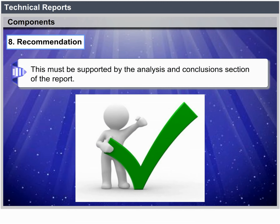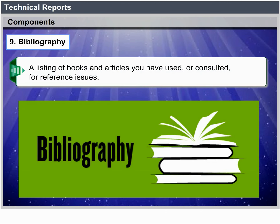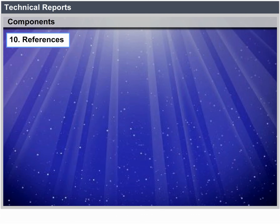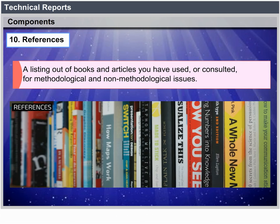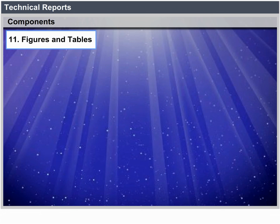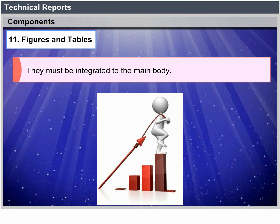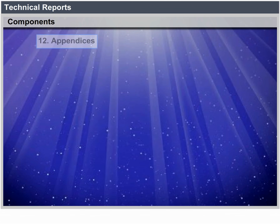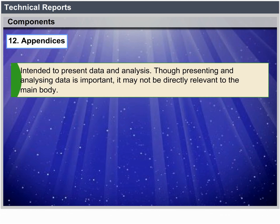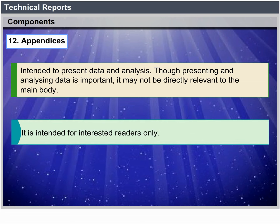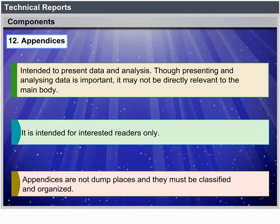Bibliography: A listing of books and articles used or consulted for methodological issues. Figures and Tables: Intended to facilitate understanding of the document by presenting relevant information and data in an easy-to-understand way — they must be integrated into the main body. Appendices: Intended to present data analysis that, though important, may not be directly relevant to the main body. They are intended for interested readers only — appendices are not dumping grounds; they must be classified and organized.